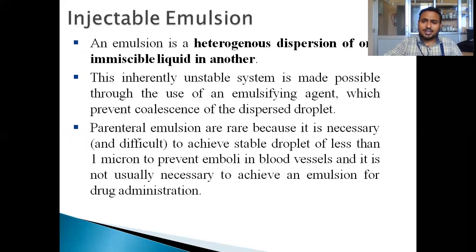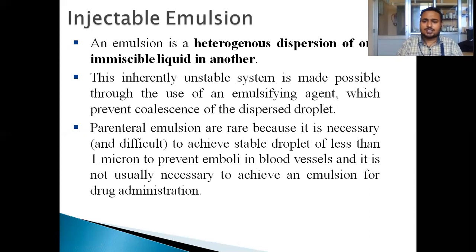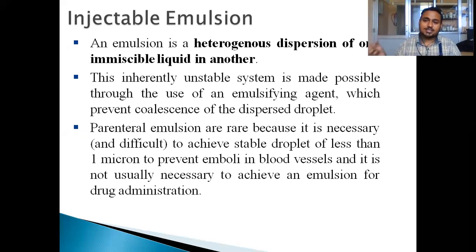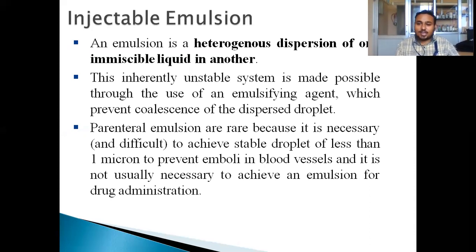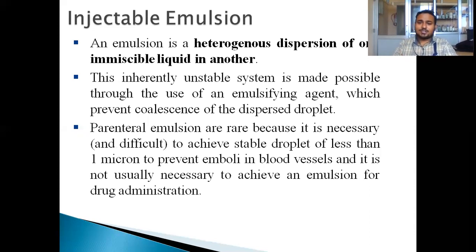Next we come to injectable emulsions. An emulsion is a heterogeneous dispersion of two phases — one is an oil phase and another is a water phase. This inherently unstable system is made possible through the use of emulsifying agents; you cannot mix oil and water simply, but with an emulsifying agent you can trigger the emulsion. We prevent the coalescence of the dispersed droplets to prepare stable emulsions.